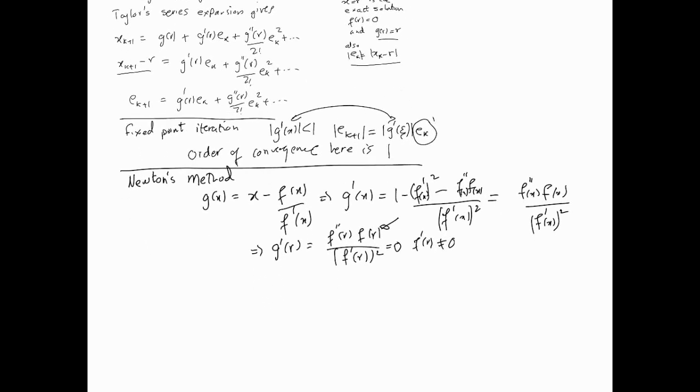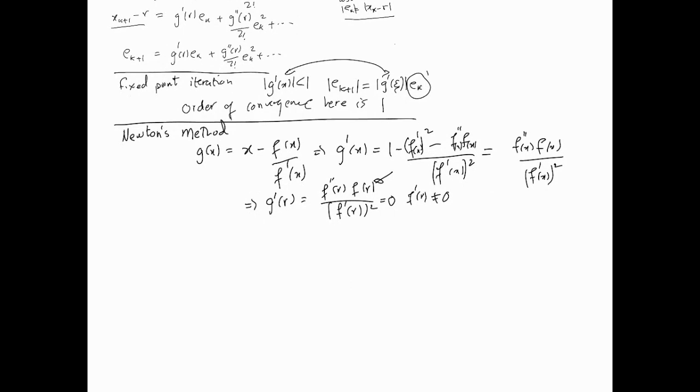Now, if it becomes 0, this means that in our expression, the error e_{k+1}, in fact, is simply the double derivative, g''(r) over 2! e_k squared. And what we're saying is, if we take this, therefore the order of convergence is 2.